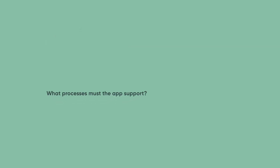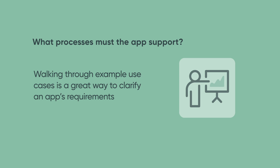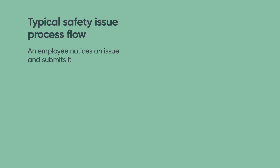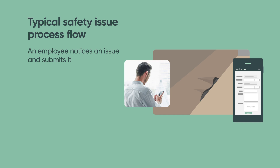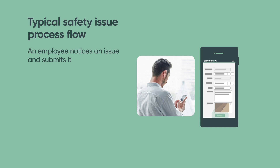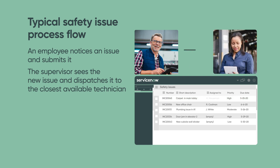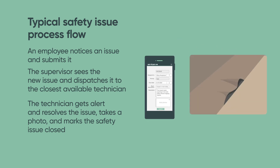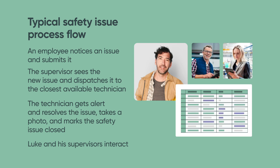Don't forget to ask yourself what processes must the app support. Walking through example use cases, or a day in the life of various users, is a great way to clarify an app's requirements. Luke envisions this example of a typical safety issue process flow: an employee in the lobby notices a carpet tile sticking up, causing a tripping hazard. He takes out his phone, opens the safety app, snaps a photo, enters some basic information, and submits it. The supervisor sees the new issue in the queue and dispatches it to the closest available technician. The technician gets an alert noting the priority and due date, goes out to replace the carpet square, then takes a photo to confirm the resolution and marks the safety issue closed.